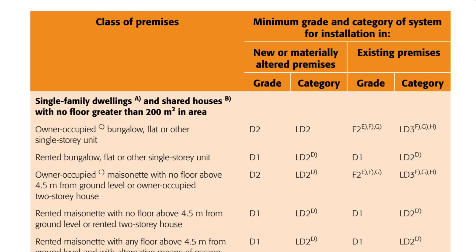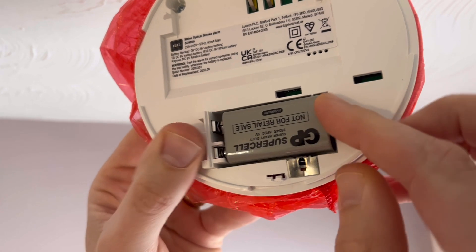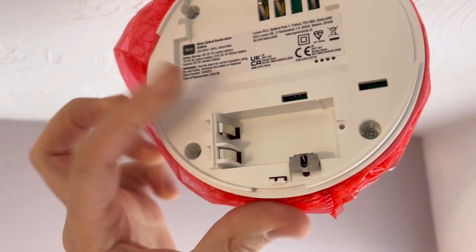Now, we're not going to go through each and every aspect of this table, but there are some key points of interest. The first is what happens when a property goes from being owner-occupied to rented out. A new or materially altered property goes from D2 to D1, meaning the smoke detector goes from having a replaceable battery to a tamper-proof non-replaceable battery — to stop tenants from whipping the battery out for their TV remote.